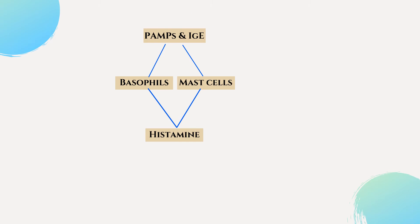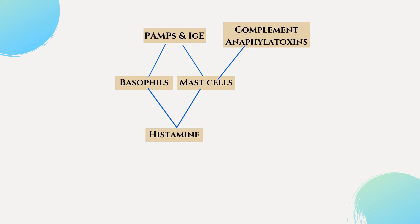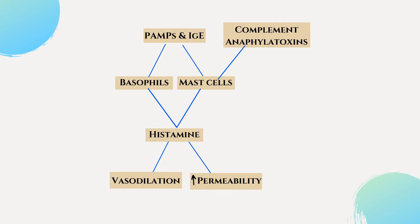The monoamine inflammatory mediator histamine is released from mast cells and basophils in response to PAMPs and IgE antibody sensitization. Anaphylatoxins from the complement system also degranulate mast cells, contributing to histamine release. Histamine causes vasodilation and increases vascular permeability, and the vasodilation caused by histamine can result in lower blood pressure.